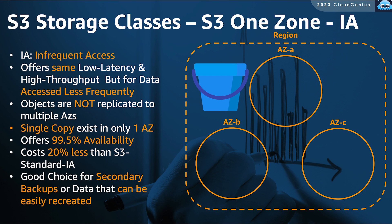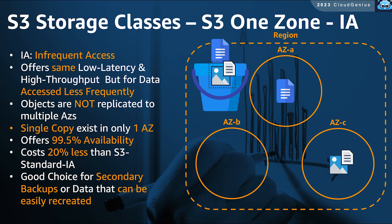The third storage class is called OneZone IA. It has the same concept as the previous one — cheaper storage costs plus retrieval costs for infrequently accessed data. But the main difference is objects are not replicated. Every object in the bucket has one single copy of it in one of the AZs of the region of that bucket. So the data availability is less — it is 99.5%. But OneZone is 20% cheaper than Standard IA. This is a perfect choice for secondary copies of data backups or data that you can regenerate.